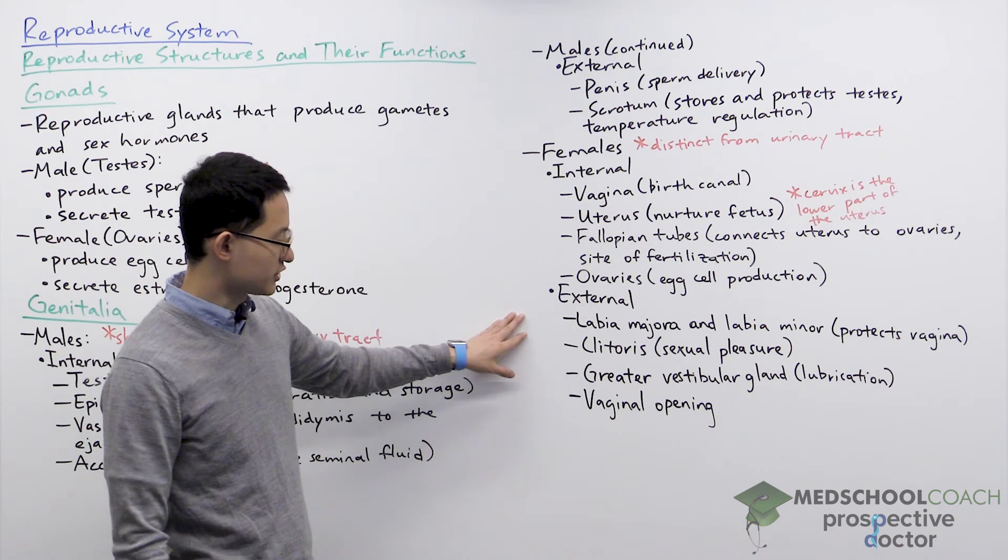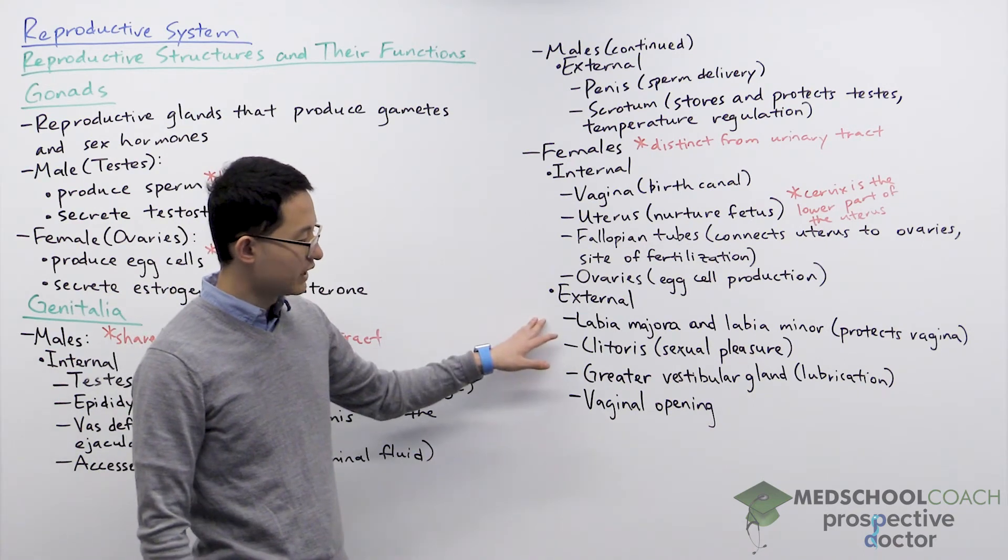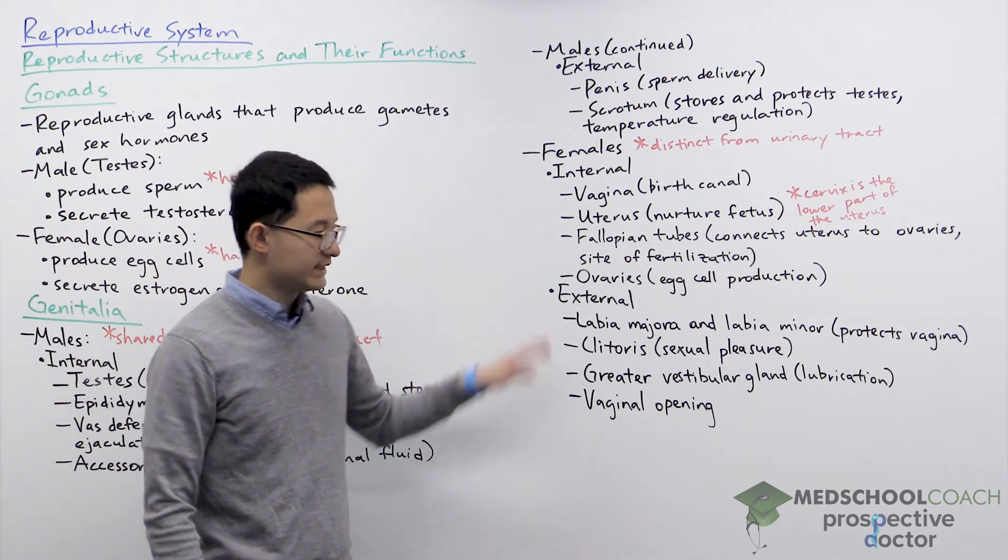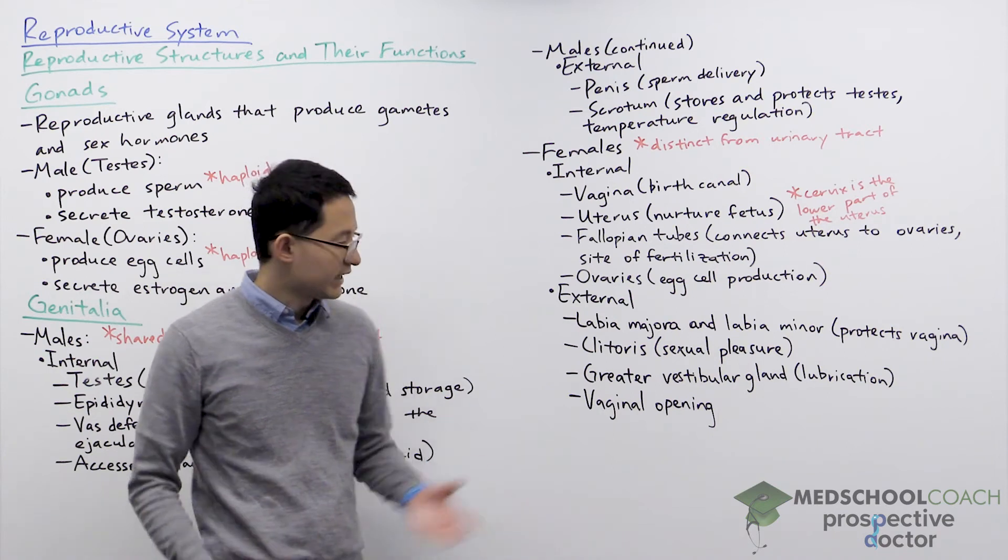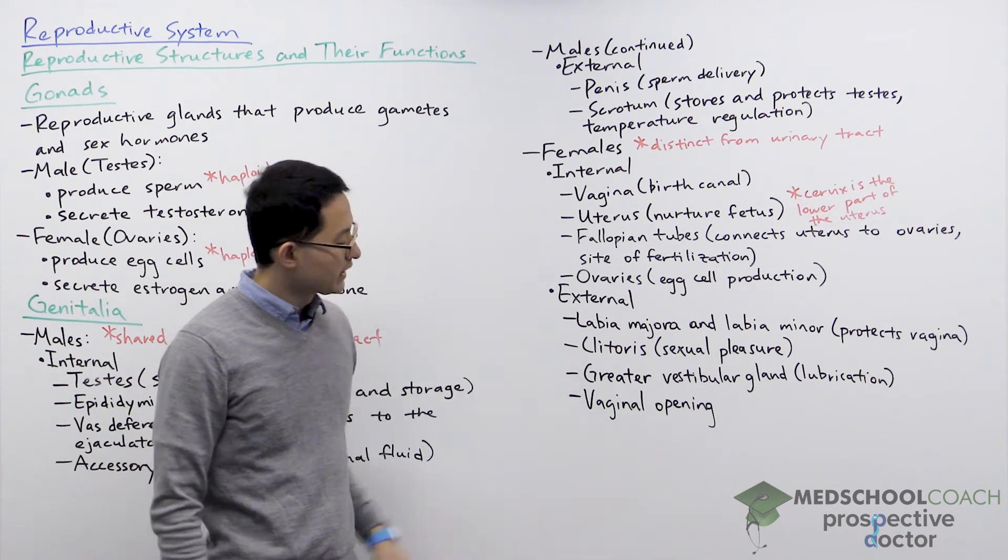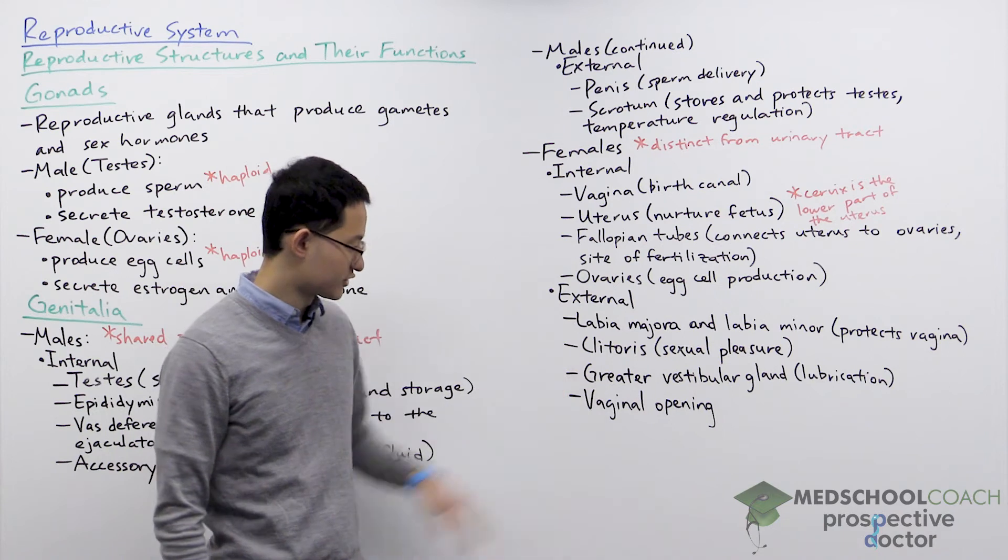For the external structures you have the labia majora and the labia minora. These are the lips of the vagina and they provide protection. You have the clitoris which is important for sexual pleasure.